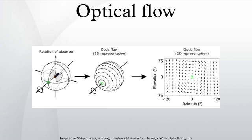The optical flow methods try to calculate the motion between two image frames which are taken at times T and T plus delta T at every voxel position. These methods are called differential since they are based on local Taylor series approximations of the image signal. They use partial derivatives with respect to the spatial and temporal coordinates. For a 2D plus T dimensional case, a voxel location with intensity will have moved by delta x and delta y between the two image frames, and the following brightness constancy constraint can be given.